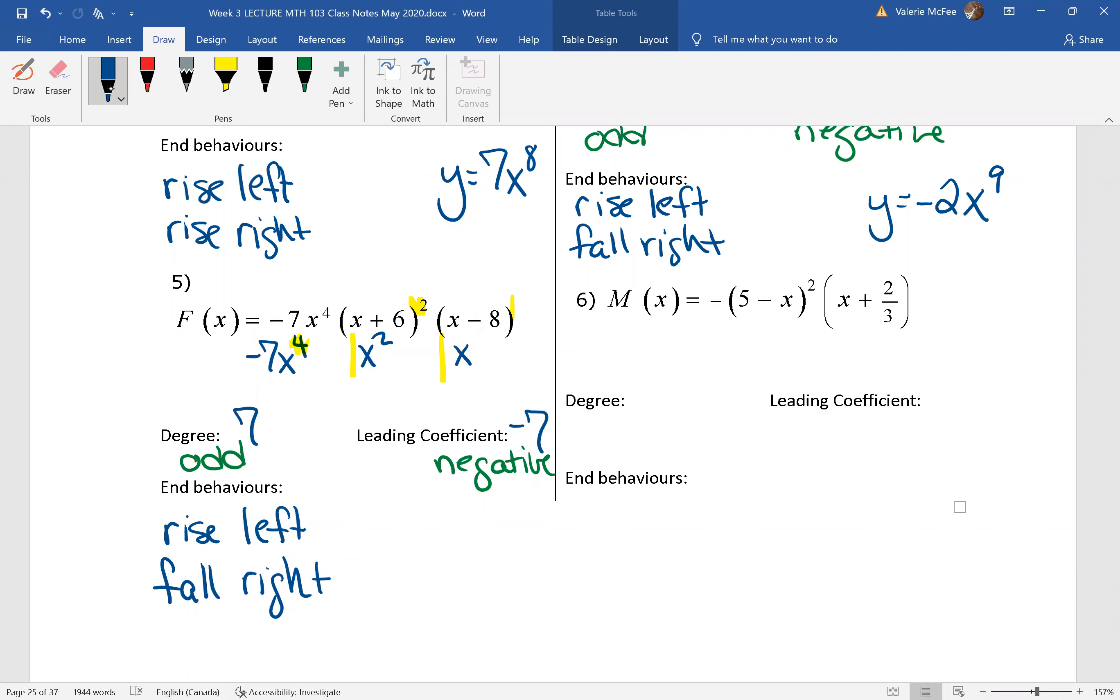Finish up with question 6. In our final example, we again have a function of odd degree with a negative leading coefficient. We have this negative sign out here giving us -1. That would multiply a positive x² and a positive x. So again, the ends rise on the left, fall on the right.